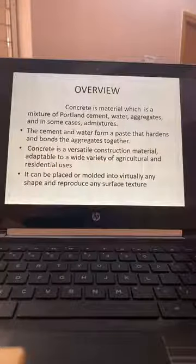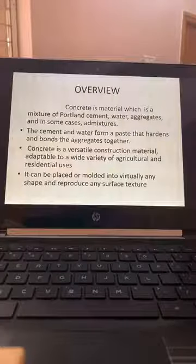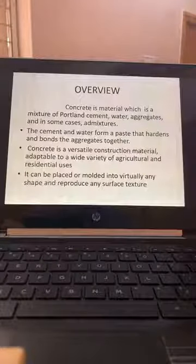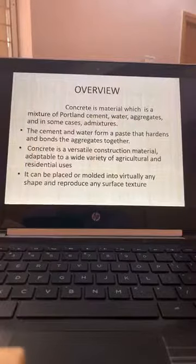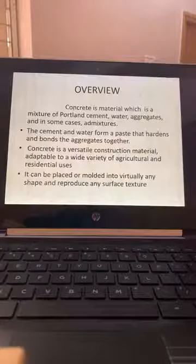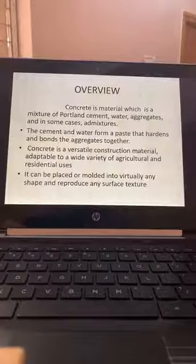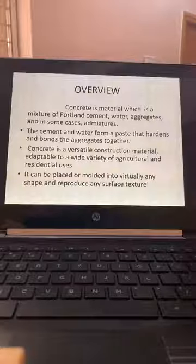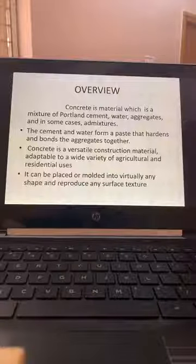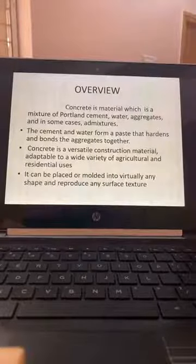Concrete is Portland cement, water, aggregates, and in some cases admixtures. The cement and water form a paste that hardens and bonds the aggregates together — basically a mechanical bond between aggregates and a chemical bond from the cement paste. Concrete is a versatile construction material adaptable to a wide variety of agricultural and residential uses — canals, dams, reservoirs — and it can be placed or molded into virtually any shape.